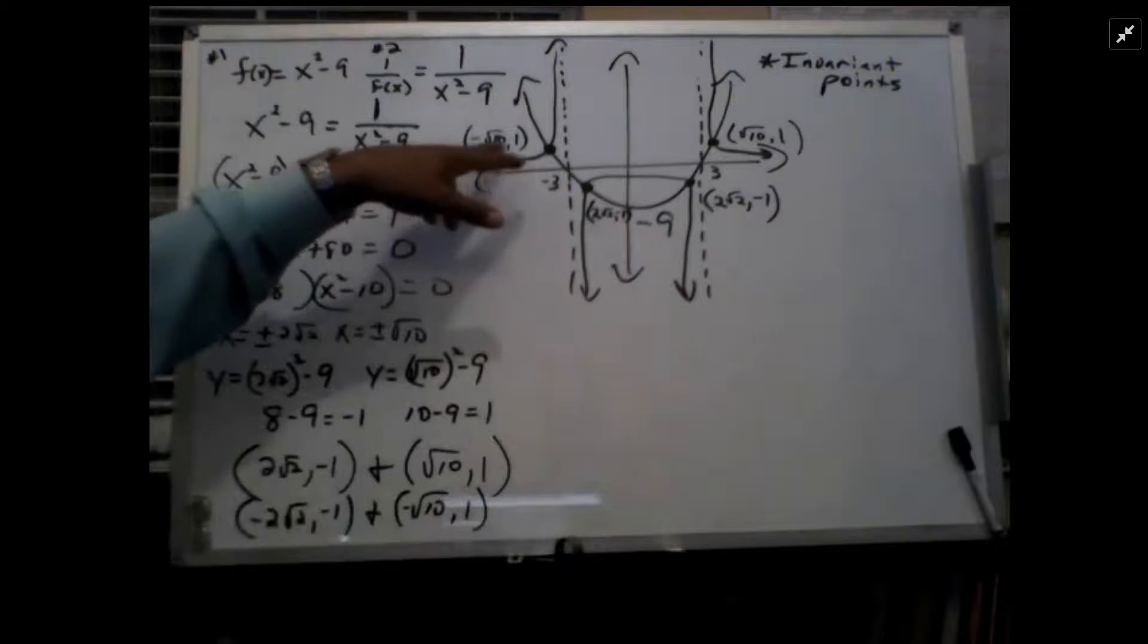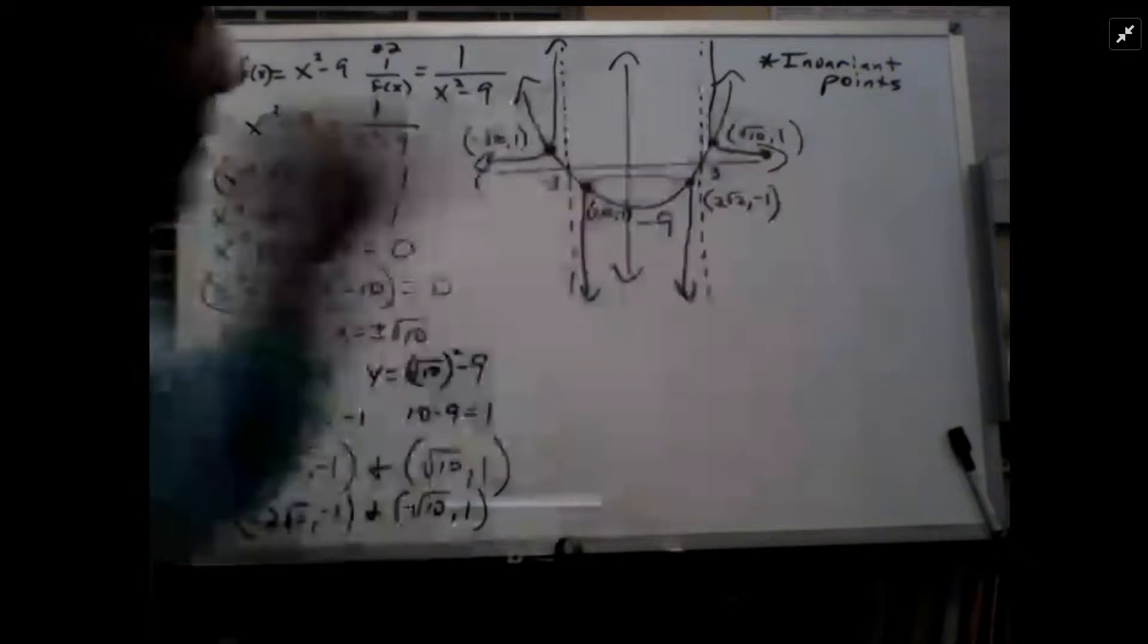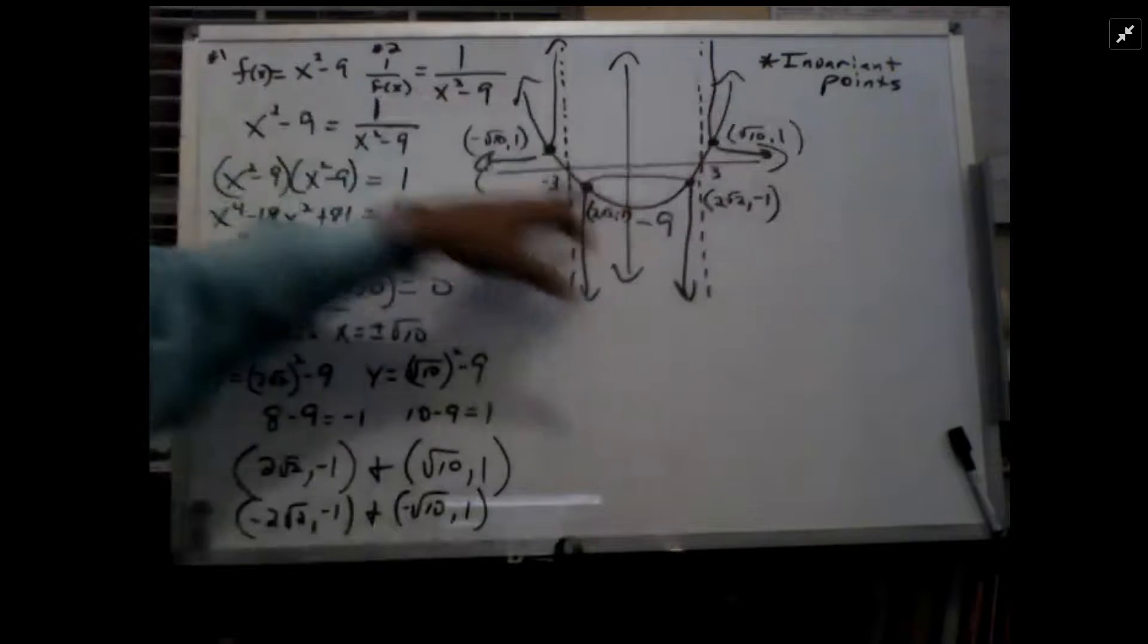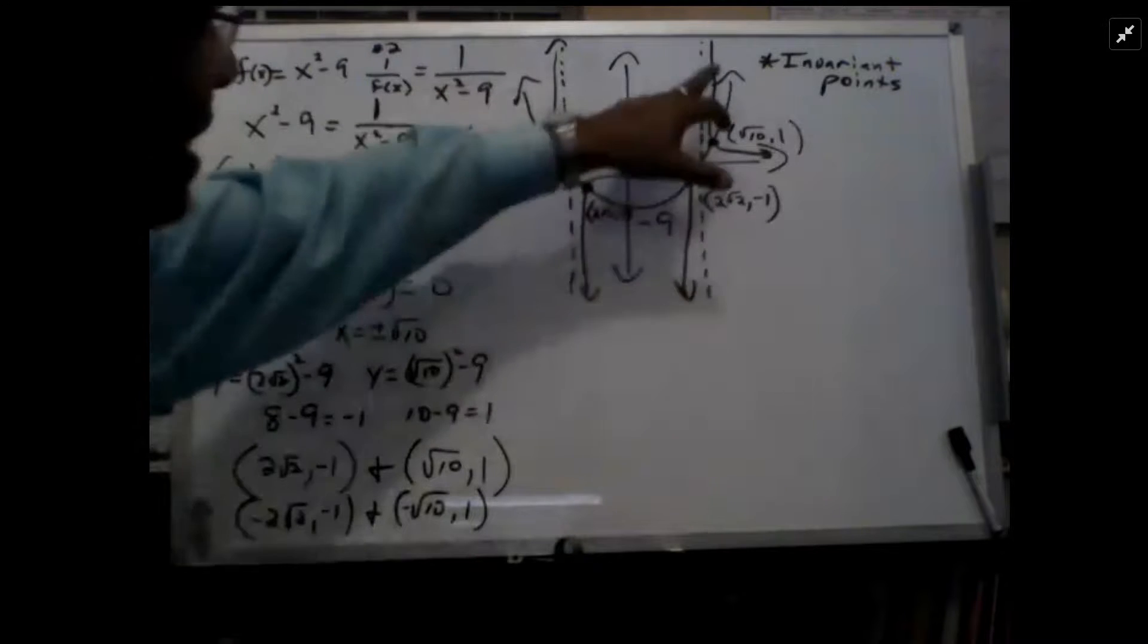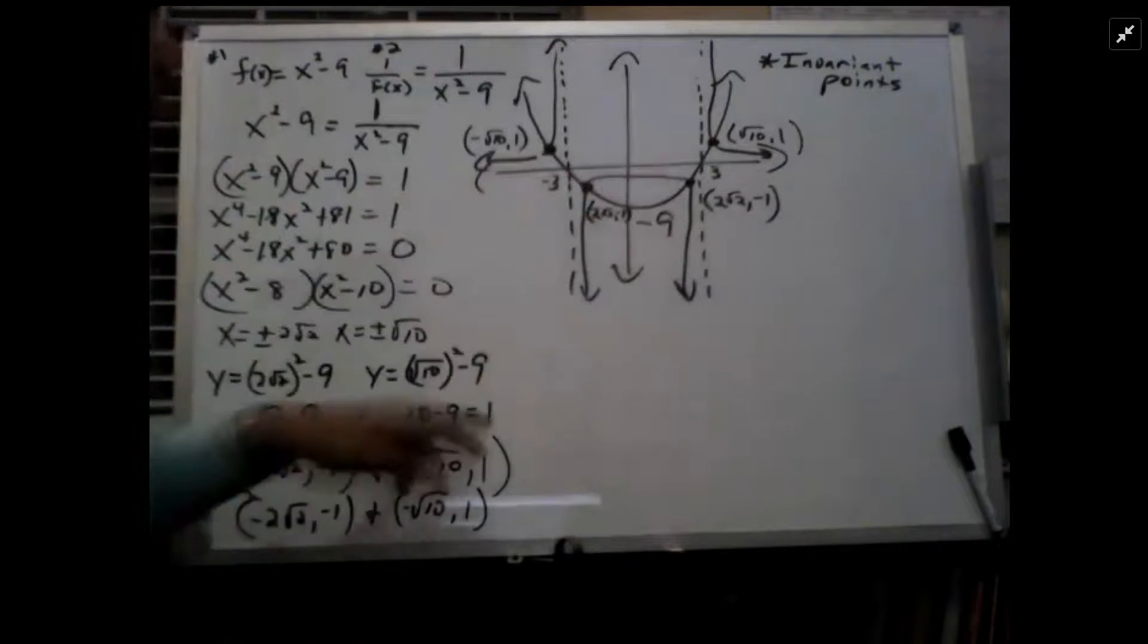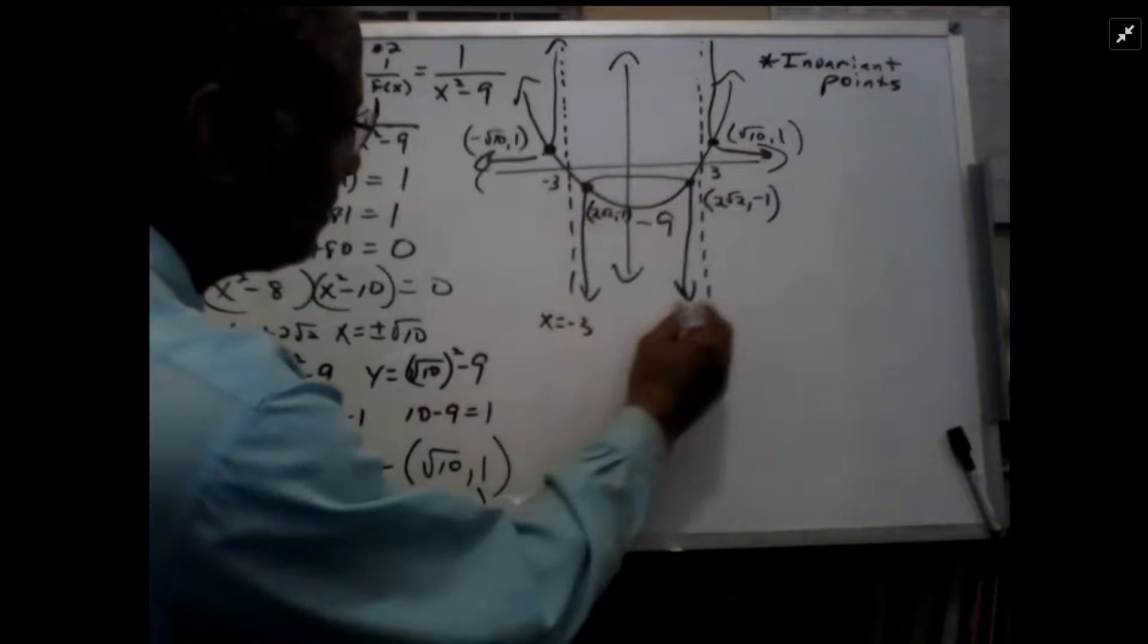Here's your negative radical 10, 1 here. There's your positive radical 10, 1 there. That is the graph of x squared minus 9. This is the graph with the vertical asymptotes at 3 and negative 3. At the risk of putting way too much on this.